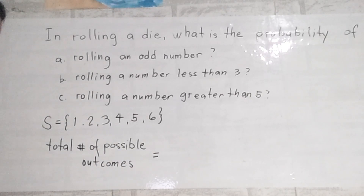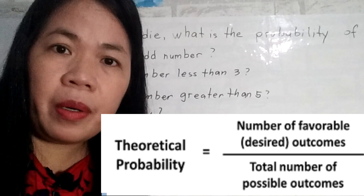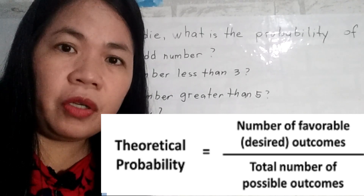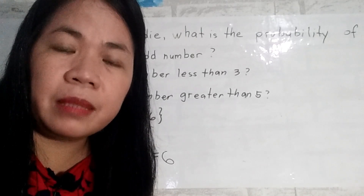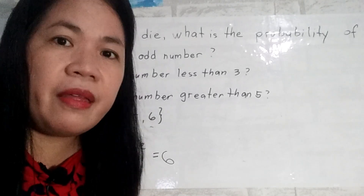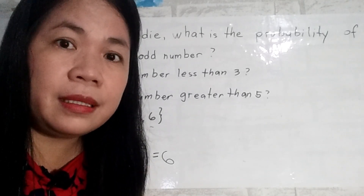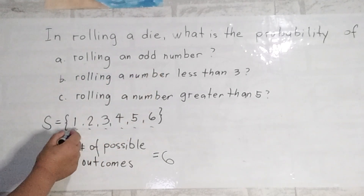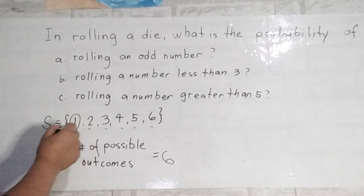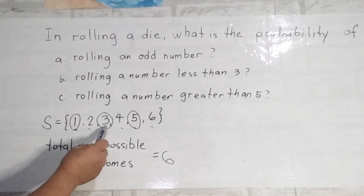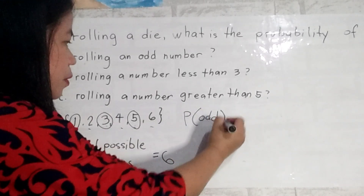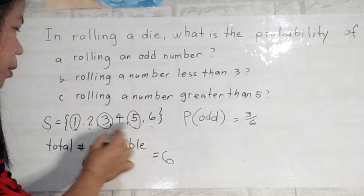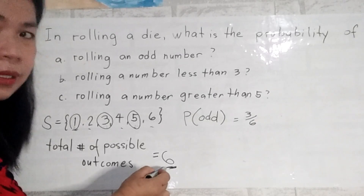Remember our formula: number of favorable outcomes over the total number of possible outcomes. For rolling an odd number, there are 3 favorable outcomes — 1, 3, and 5. The probability of rolling an odd number is 3 over 6. For rolling a number less than 3, the numbers 1 and 2 are less than 3, so we have 2 favorable outcomes — probability is 2 over 6. For rolling a number greater than 5, only 6 qualifies, so we have 1 favorable outcome — probability is 1 over 6.